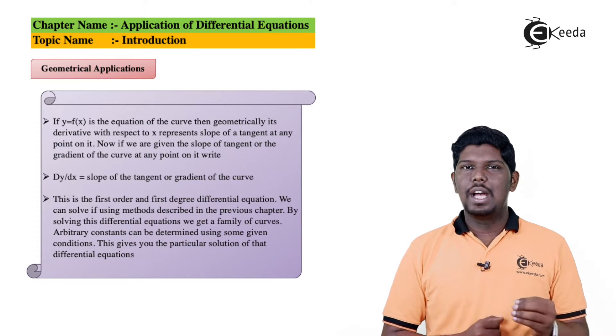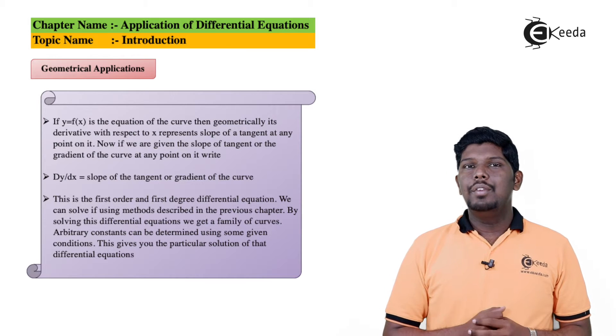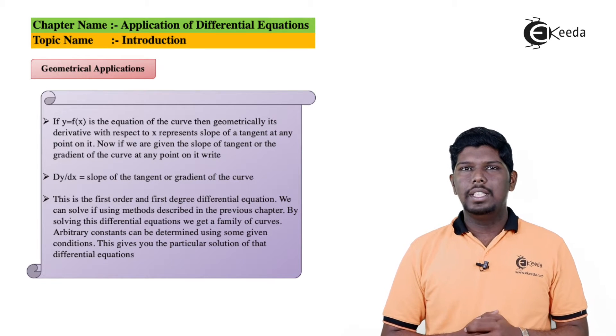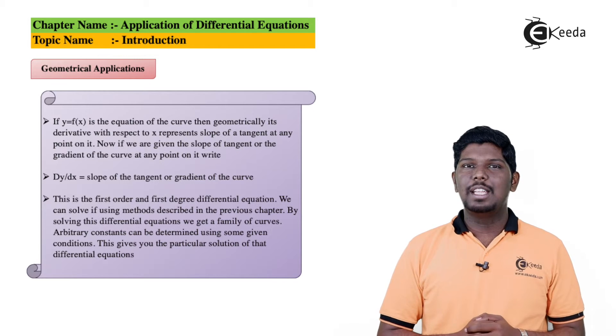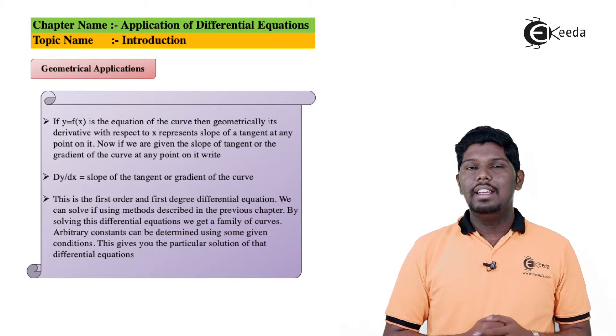So if we have a function say y is equal to f, and we differentiate this function with respect to x, the value that we get, that is dy by dx, is nothing but the slope of tangent.